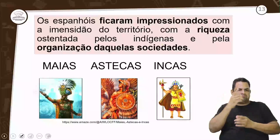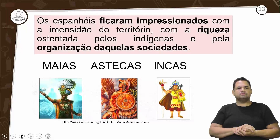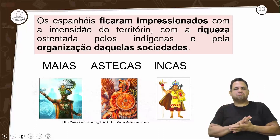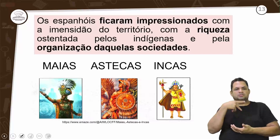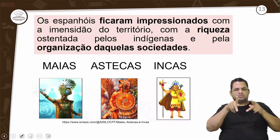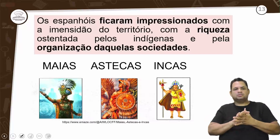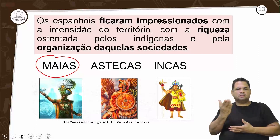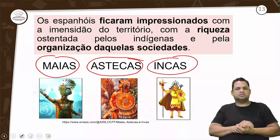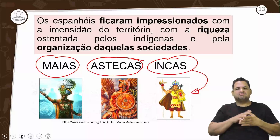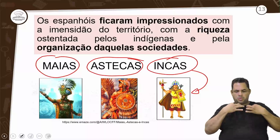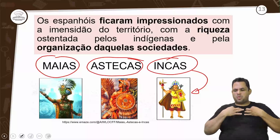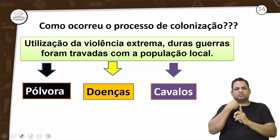Eles encontraram essa riqueza e ficaram impressionados com a imensidão do território. A riqueza era ostentada pelos indígenas e pela organização daquela sociedade. Temos o povo inca, maia e asteca. No altiplano boliviano ainda há muito povo que preserva a vestimenta inca. Esse povo tinha ornamentação, riqueza, esplendor; as roupas e as classes sociais eram bem definidas.